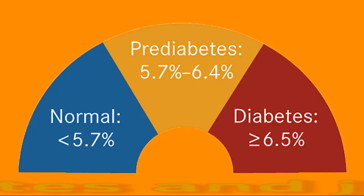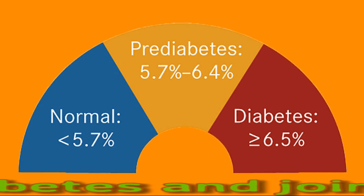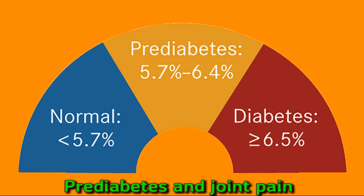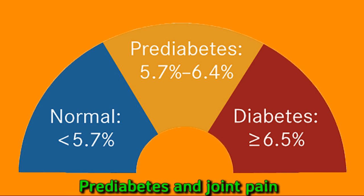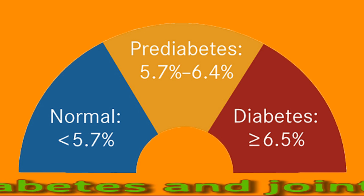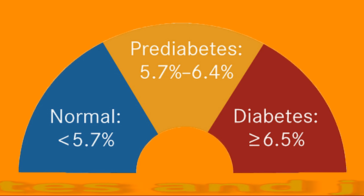Pre-diabetes and joint pain: Maintaining a moderate weight can help a person reduce the risk of pre-diabetes and joint pain. Excess weight can lead to higher blood sugar levels, and the pancreas may be unable to produce enough insulin to keep up, which can cause a person to develop type 2 diabetes. Carrying excess weight also puts stress on the joints, particularly in the lower body. To reduce the risk, a person should maintain a moderate weight by exercising regularly and eating a nutritious diet of whole grains, vegetables, fruits, and lean proteins.